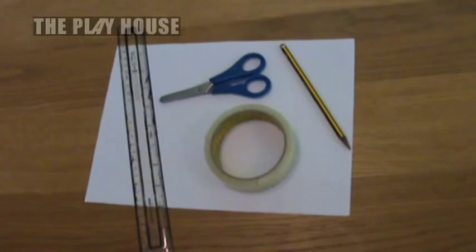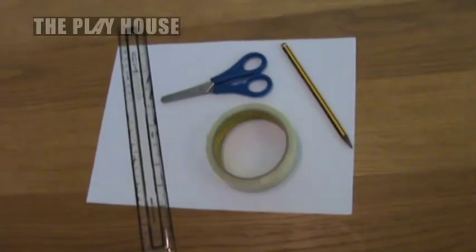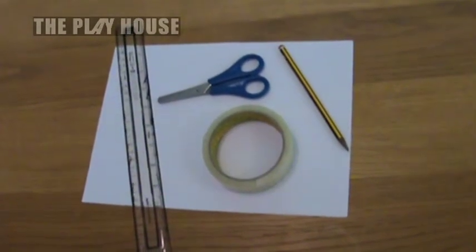So this is how to make a simple tube that you can use with other simple tubes to make a ball run. These are the things you're going to need: ruler, scissors, tape, pencil, and an A4 sheet of paper.